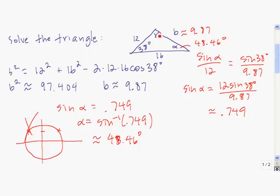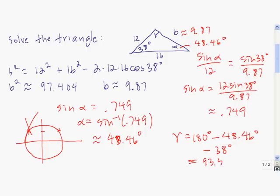The value of alpha is 48.46. Then gamma is found by subtracting 48.46 and 38 from 180 degrees, which gives about 93.54. That solves the triangle. Note: when I said alpha is the smallest angle, I was referring to alpha and gamma — between those two, alpha is the smallest, which is why we could disregard the obtuse solution.